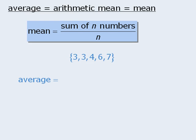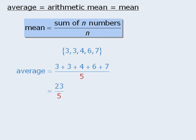For example, to calculate the average of these five numbers, we will find their sum, and then divide this by 5. When we simplify this, we see that the average, or mean, is 4.6.